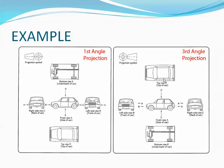In third angle projection, everything is the opposite: left becomes right, right becomes left, top and bottom are swapped. The front view is in the center, the top view is above it, the rear view of the car is on the right, and the front of the car is on the left side. The bottom view is at the bottom of the front view. These symbols represent first angle or third angle projection.